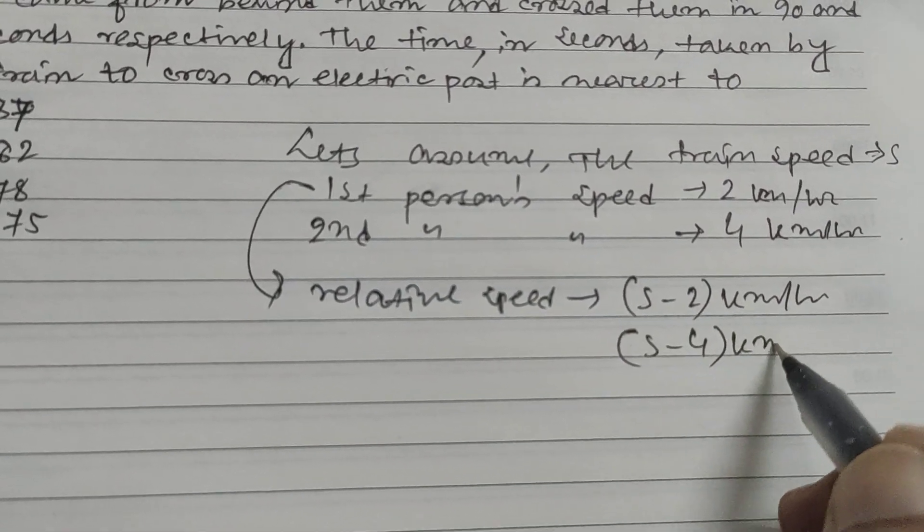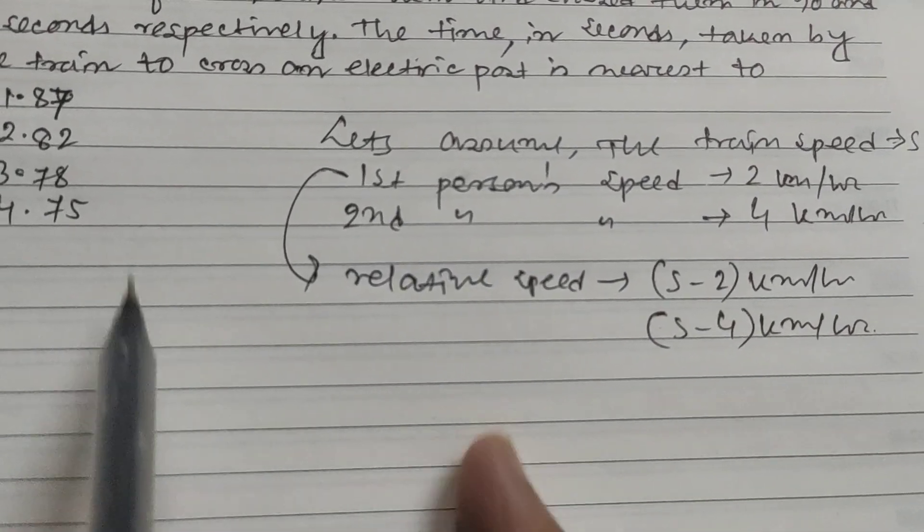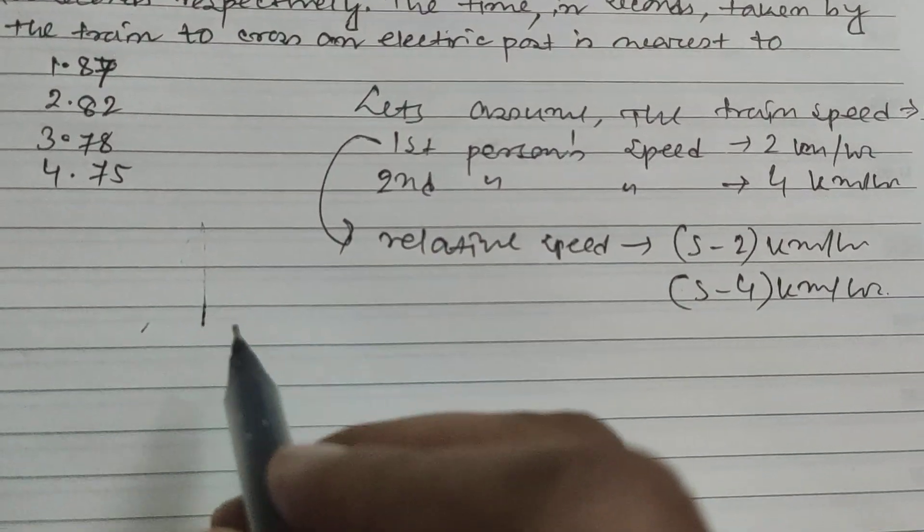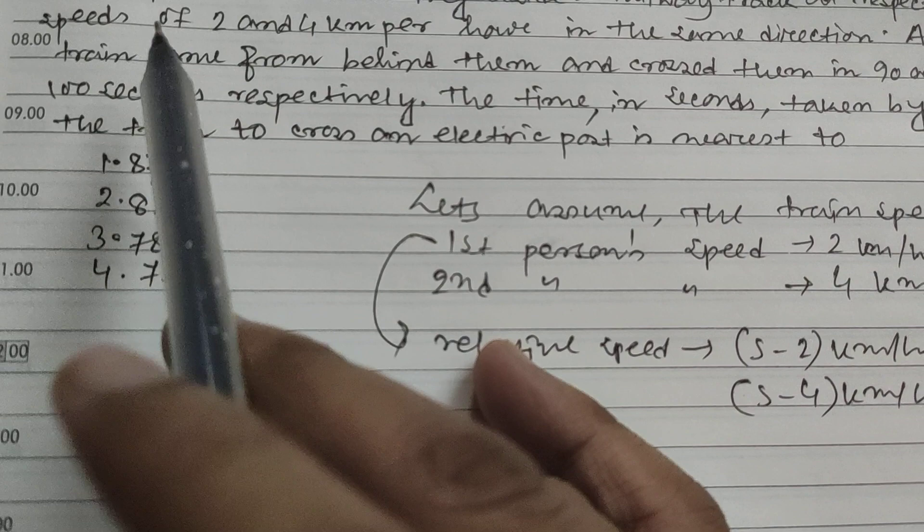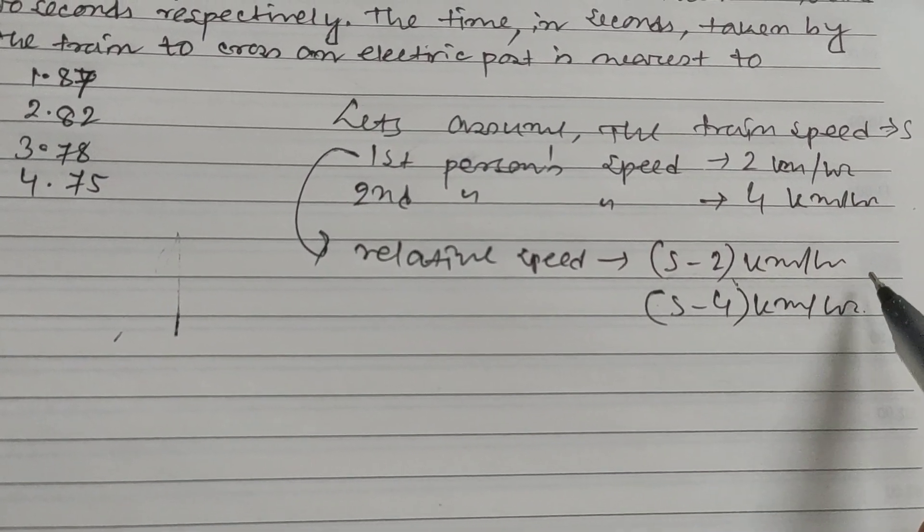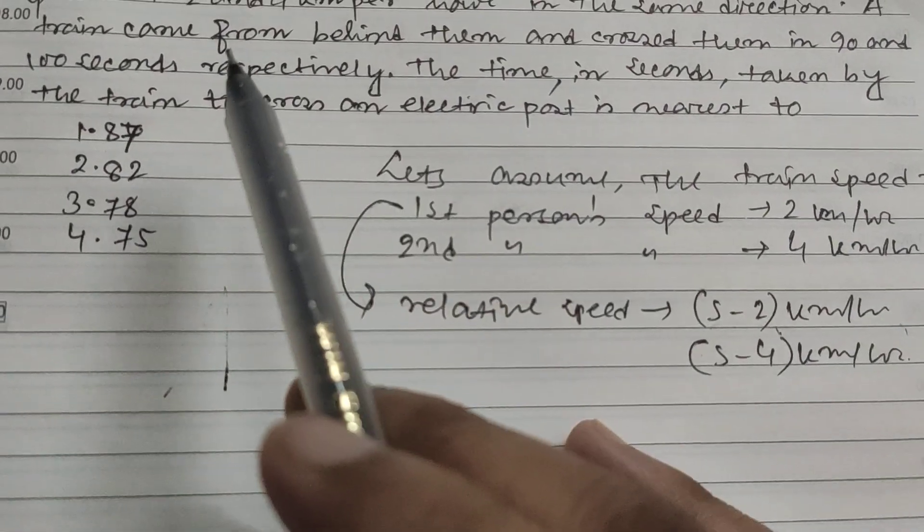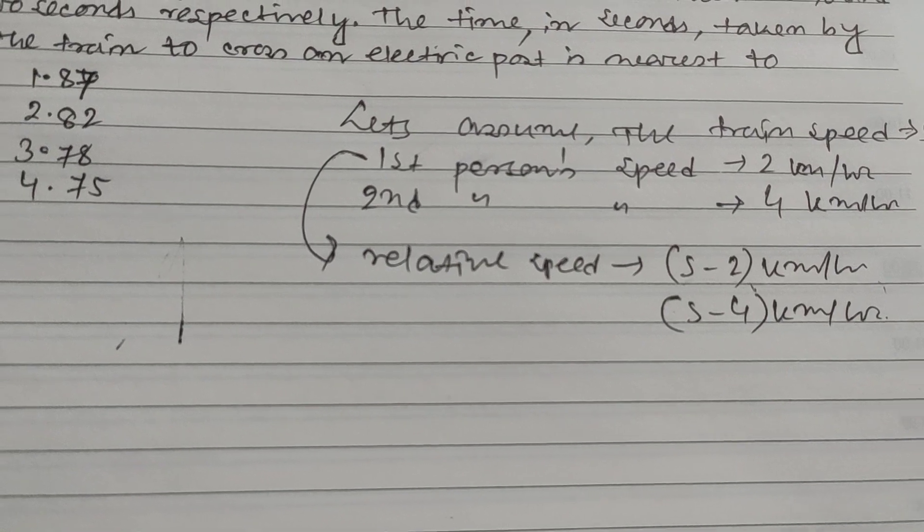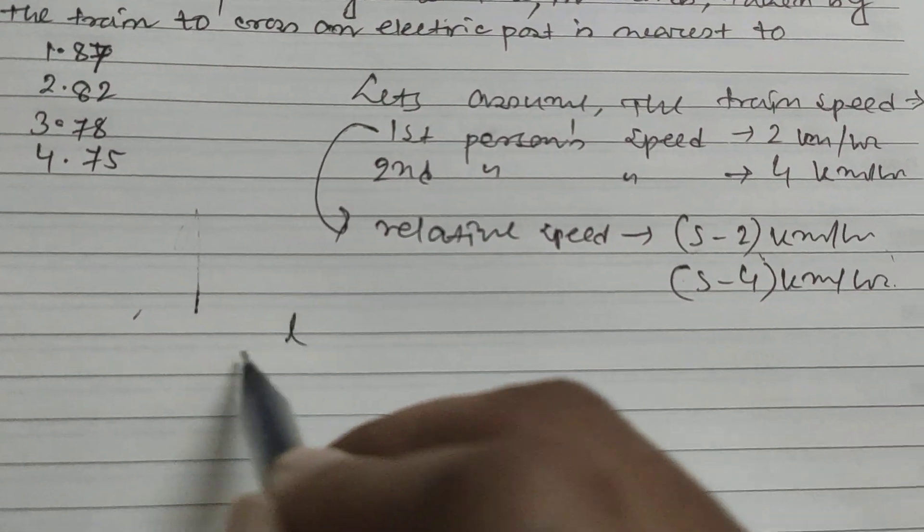The time will be the length of the train divided by this speed. This is in kilometers per hour but we need seconds, so you need to convert it into meters per second. Length divided by speed - if you multiply by 5 by 18, it will be in meters per second.